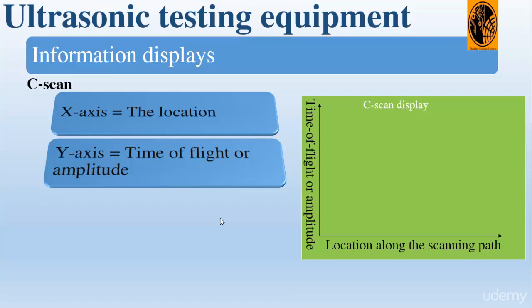Discontinuity location and size data are available from changes in amplitude as a function of position. These are displayed on a screen or recorded on paper. Modern C-scan systems use computers to control the transducer position and to acquire, display, document, and store the results.